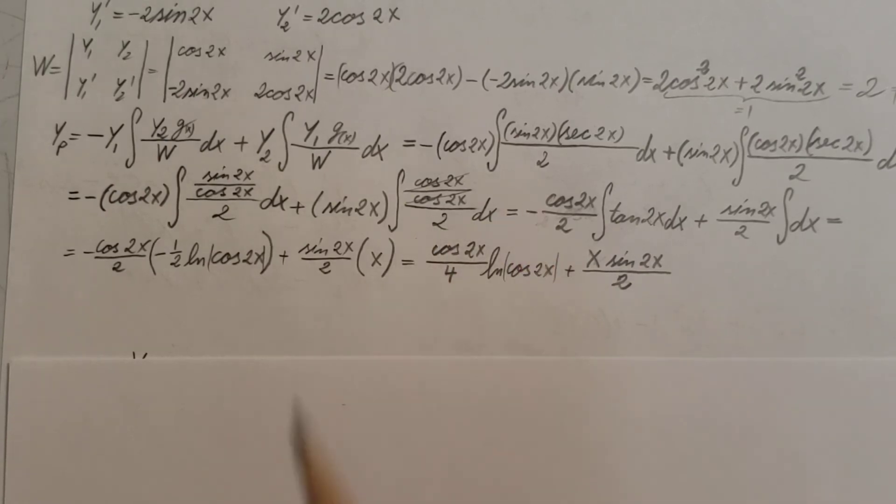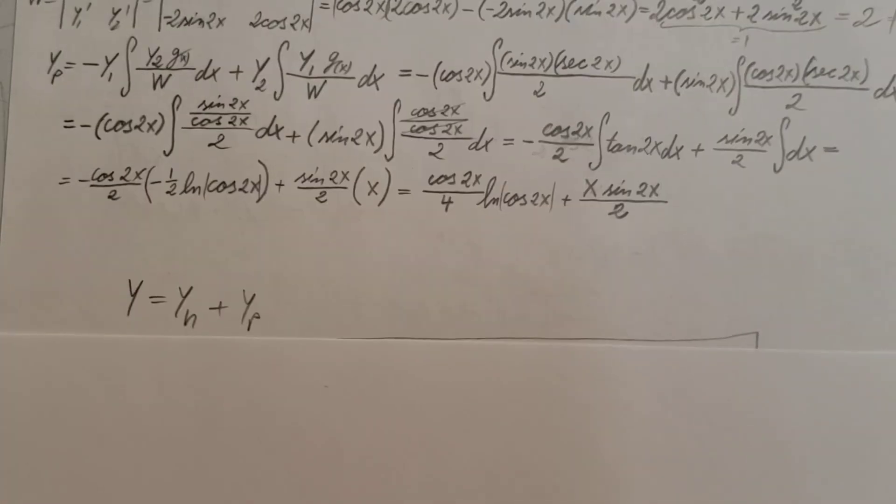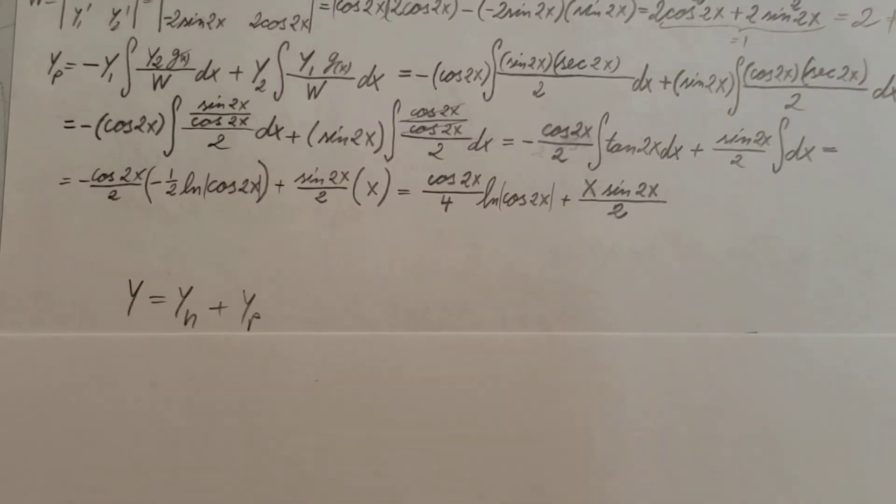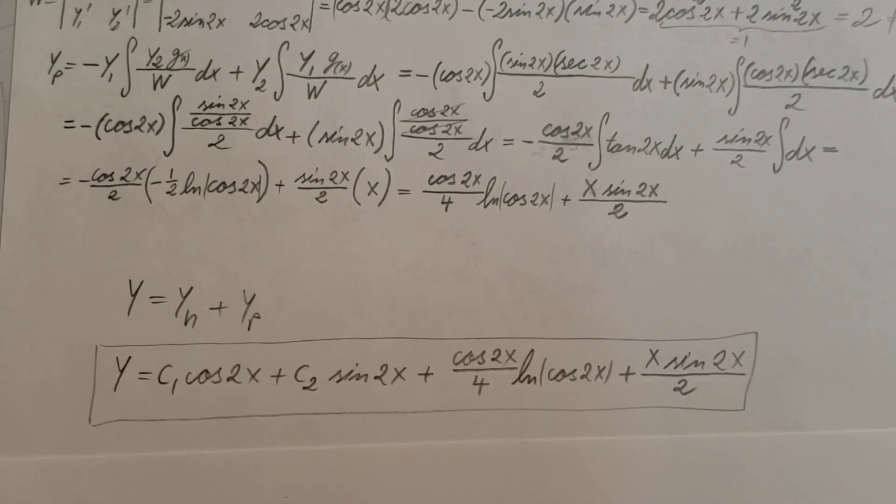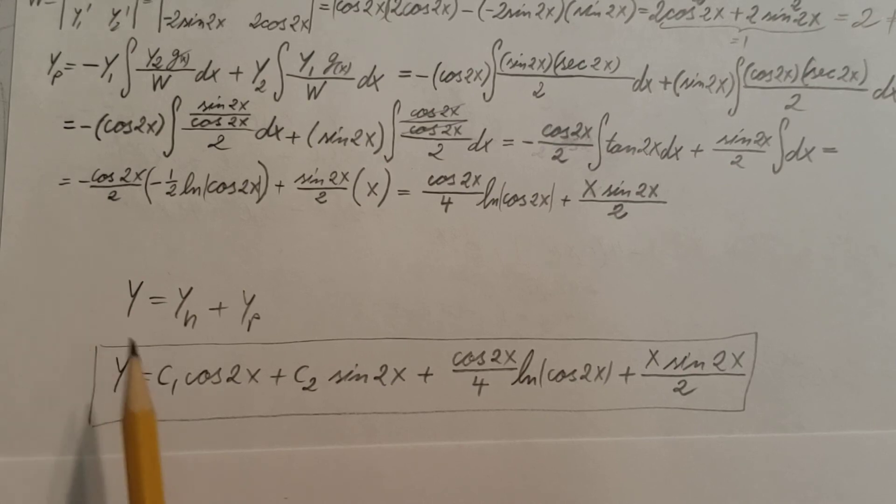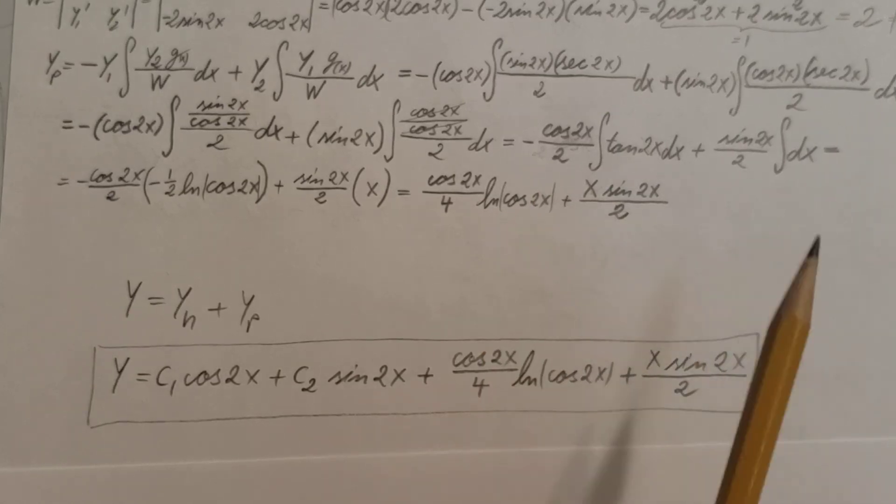Okay, so now all that is left is to write up our final answer, which is y = yh + yp. There it is. Let's plug everything in, make sure we don't forget the constants where the constants are needed. So c1 cos(2x) + c2 sin(2x), plus right here what we found our yp, which is cos(2x)/4 ln(cos(2x)) + x sin(2x)/2.